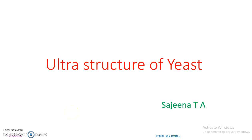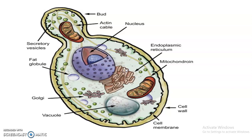Good morning. This is Ajina. Today we can see the ultrastructure of yeast. This is the ultrastructure of yeast — Saccharomyces cerevisiae. Here we can see an oval-shaped cell. The size and shape of the yeast will vary with the species. Here we can see a cell wall; inside the cell wall, the plasma membrane can be seen, and the cytoplasm or cytosol with various cytoplasmic organelles. Here we can see a bud which is attached to the parent cell.